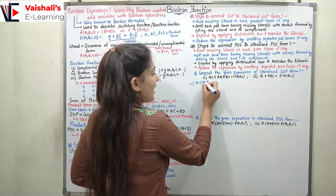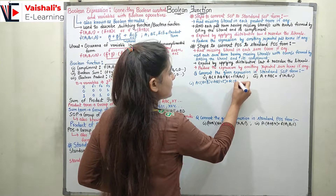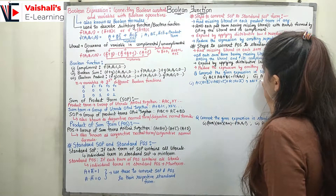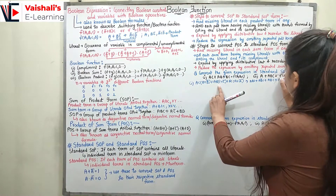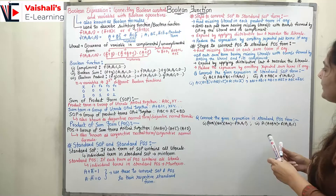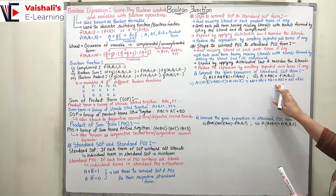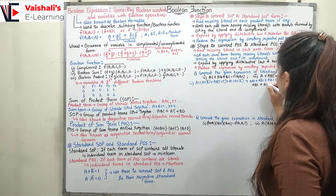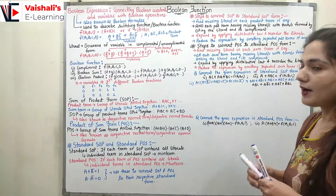For the first question with f(a,b,c) = ac + ab + bc: in 'ac', b is missing so AND with (b + b_bar); in 'ab', c is missing so AND with (c + c_bar); in 'bc', a is missing so AND with (a + a_bar). Expanding gives: abc + ab_bar·c, then abc + abc_bar, then abc + a_bar·bc. After removing repeated abc terms, the standard SOP is: abc + ab_bar·c + abc_bar + a_bar·bc.